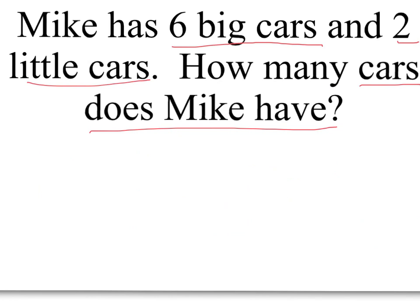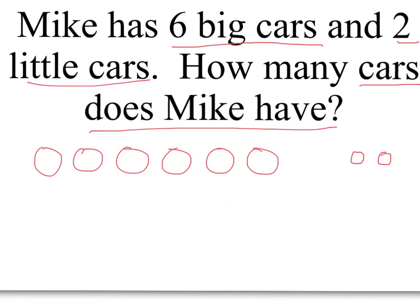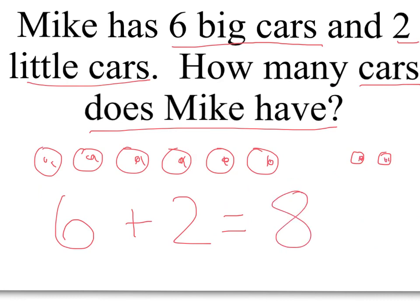Mike has six big cars — one, two, three, four, five, six — and two little cars — one, two. How many cars does Mike have? He had one, two, three, four, five, six big cars, plus one, two, three, four, five, six, seven, eight. And my label is — what have we been talking about? Cars.